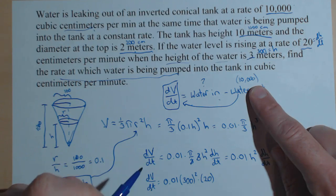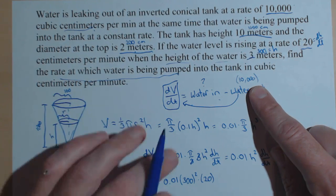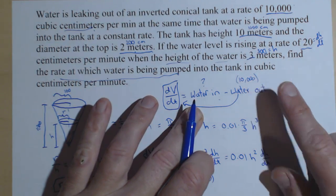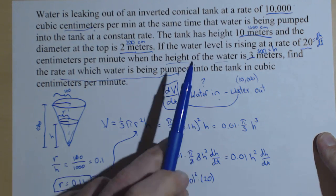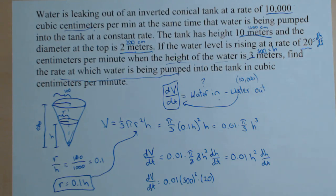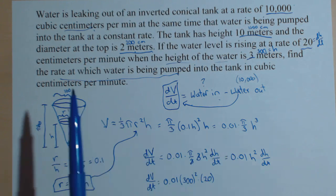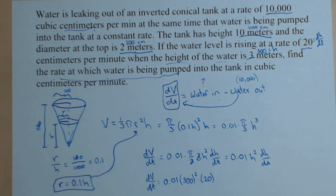We're going to add the 10,000. And then we'll have the rate that water is being pumped into the tank. So, take your value here, add the 10,000, and you've got the rate that water is being pumped in, in cubic centimeters per minute.